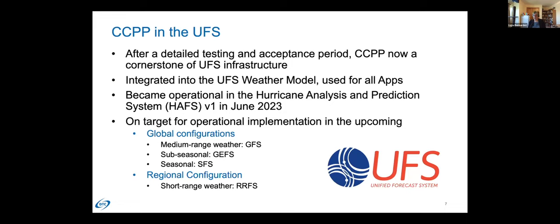In the Unified Forecast System, since the 2017 initial development there has been extensive development and testing, such that CCPP is now a cornerstone of the UFS infrastructure, integrated in the UFS weather model and used for all UFS applications — short-term weather, regional, long-term weather, global, and more. CCPP went operational at NOAA in June 2023 as part of the Hurricane Analysis and Prediction System HAFS version 1, its first operational deployment. It is now on target for operational implementation in GFS, GAFS, SFS, and the short-range weather application RRFS.